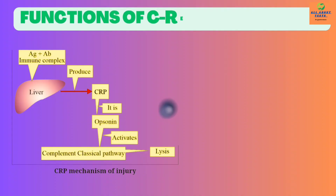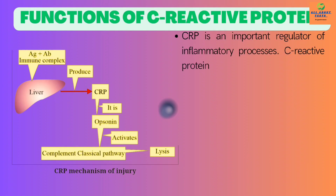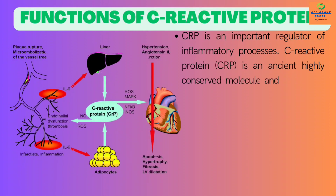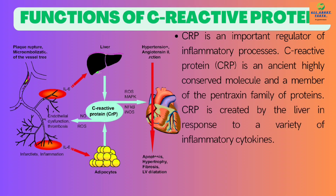Functions of C-reactive protein. CRP is an important regulator of inflammatory processes. C-reactive protein is an ancient, highly conserved molecule and a member of the pentraxin family of proteins. CRP is secreted by the liver in response to a variety of inflammatory cytokines.